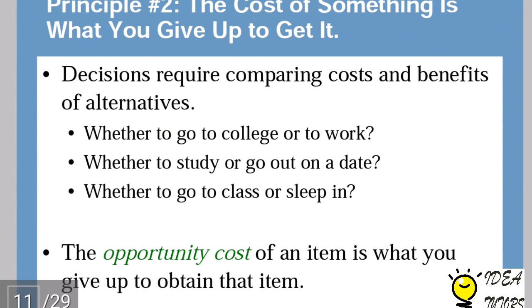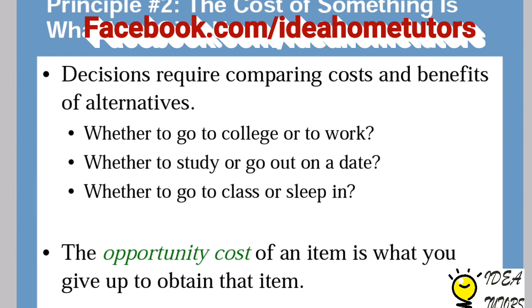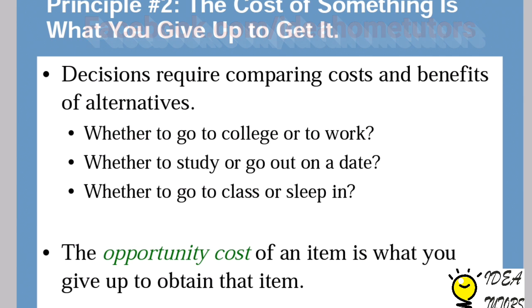The second principle is: the cost of something is what you give up to get it. Every decision requires comparing costs and benefits of alternatives. Suppose we have two goods, guns and butter — we analyze the cost and benefit of both and decide which one to produce and in what quantity. The opportunity cost of an item is what you give up to obtain it. If I want to produce extra butter given limited resources, I have to reduce the quantity of guns produced — that reduction in guns is the opportunity cost of producing that extra butter.